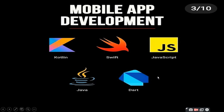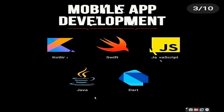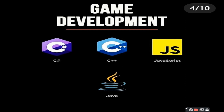Mobile app development. In today's world, nothing works without mobile. For mobile app development, you need Kotlin, Swift, JavaScript, Java, and Dart. Dart, Swift, and Kotlin are used specifically for app development, and JavaScript as mentioned is used for action scripting. Java includes both Core Java and Advanced Java.